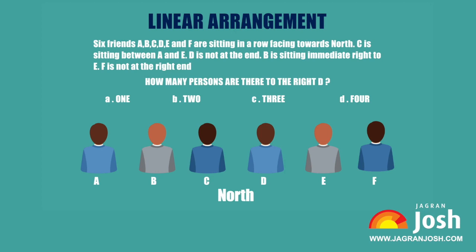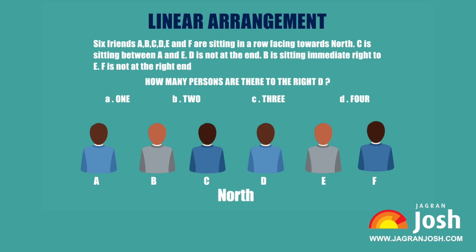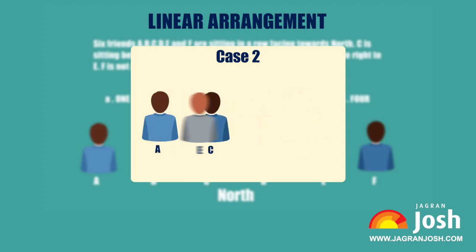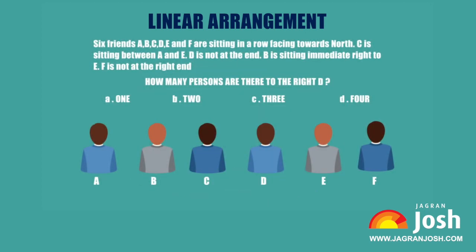Solution: All the people are facing north. Since C is sitting between A and E, we get two possible cases — Case 1: A C E, or Case 2: E C A. However, we still cannot fix a place for them on the grid. D cannot be at either of the ends, and B is sitting to the immediate right of E. Hence Case 2 is discarded, and we have the arrangement: A C E B.